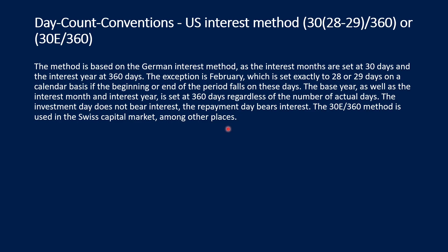The US interest method, 30E/360, is based on the German interest method: interest months are set at 30 days and the interest year at 360 days. The exception is February, which is set exactly to 28 or 29 days on a calendar basis if the beginning or end of the period falls on those days. The base year, interest month, and interest year are all set at 360 days regardless of actual days. The investment day does not bear interest; the repayment day does. The 30E/360 method is used in the Swiss capital market, among other places.